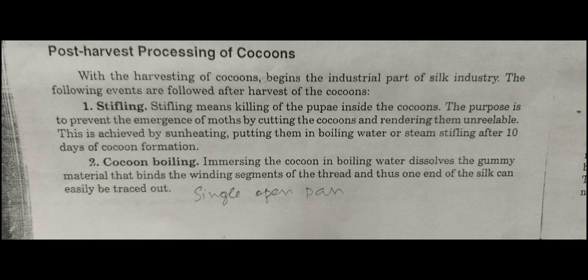What do we need to do with the harvested cocoon? We need to perform stifling — the killing of the pupa inside the cocoon. Inside the cocoon, the caterpillar has been converted into a pupa. The purpose of stifling is to prevent the emergence of the moth, as the pupa would otherwise convert into a moth.